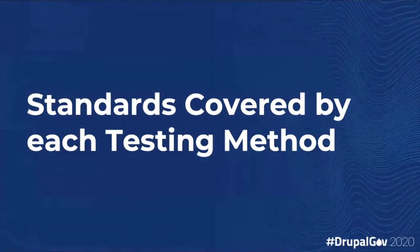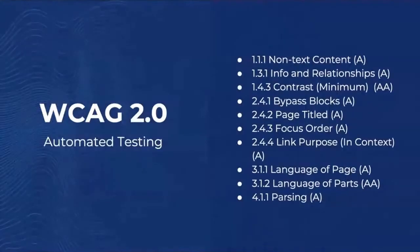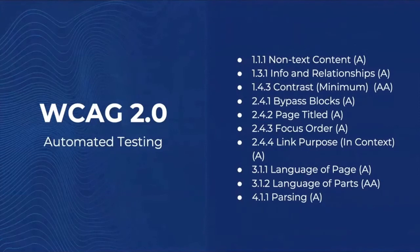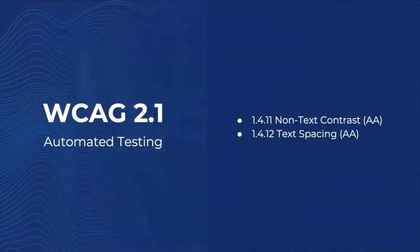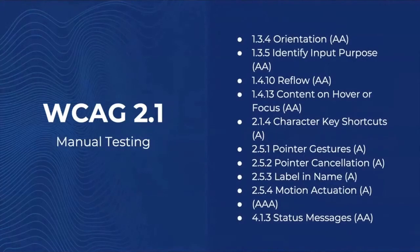Just really quickly on standards covered — I'm not going to go through every standard but wanted to do an example. For WCAG 2.0, automated testing looks like it covers a lot, but when you go to manual testing you can see all of the additional standards covered on top of that, which is really why that 25% number comes out. For WCAG 2.1 — remembering it also covers all the standards for 2.0 — there are only two standards covered by automated testing, and then a much larger list covered by manual testing. This covers A and AA and is not looking at AAA.